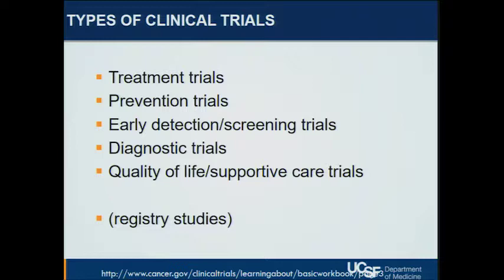There is a whole range of types of trials. The obvious ones are treatment trials, where you have a disease and you're getting an experimental therapy. There are also trials looking at preventing something — preventing the disease itself in a high-risk population. There are trials focused on detection or screening, for example studying a new imaging modality. There are studies of new diagnostics, and studies looking at quality of life, supportive care, controlling symptoms, and the role of diet and exercise. On clinicaltrials.gov, which is a very useful resource, you'll also find registry trials that track patients and outcomes over time without intervening in any particular way.